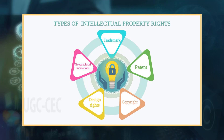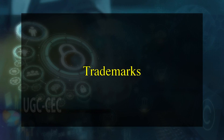Intellectual property rights mainly include trademark, patent, copyright, industrial design rights and geographical indications. Let's take a closer look at each one of them individually.